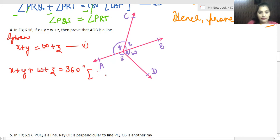The reason we give is sum of angles at a point is equal to 360 degrees. Okay.